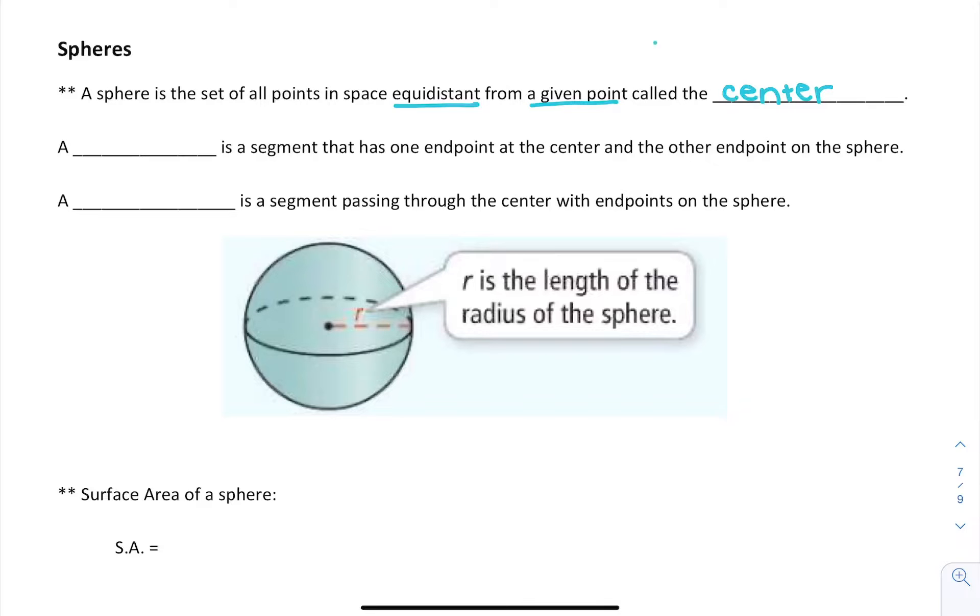So if we have a center and we figure out every point that is the same distance away from it, that creates a sphere.